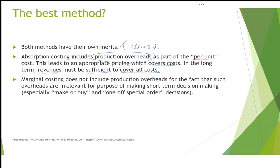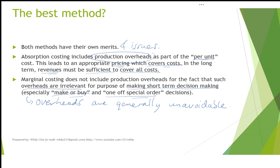The marginal costing approach ignores the production overheads, leaving this out of the cost per unit. From the point of view of marginal costing, overheads are irrelevant for the purpose of short-term decision making, especially for decisions such as make or buy, or one-off special orders. In the short term, overheads are generally unavoidable, so whichever decision is made — whether to make or to buy — overhead costs cannot be avoided. Thus, when we make short-term decisions, we do not look at irrelevant costs like overheads. That's where marginal costing is quite differently applied compared with absorption costing.